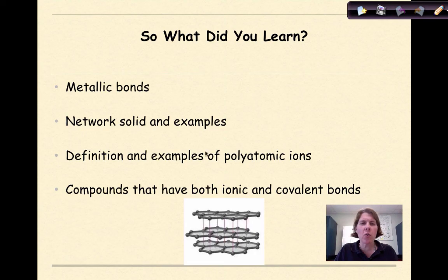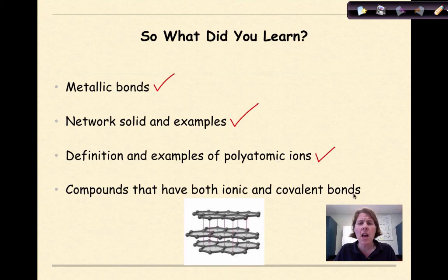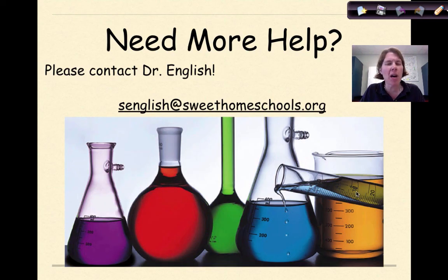To summarize: we went over the concept of metallic bonds, looked at the properties and examples of network solids, talked about the definition and examples of polyatomic ions, and specifically discussed how coordinate covalent bonds are involved in these ions. We also looked at compounds that have both ionic and covalent bonds. Need more help? Contact me — I'm always looking for feedback. I hope this was helpful. Have a great day.